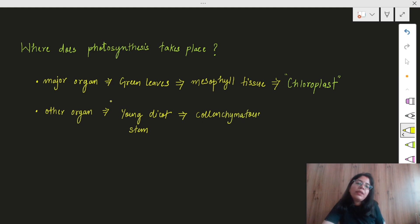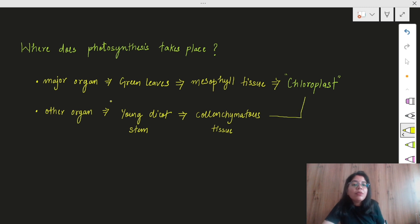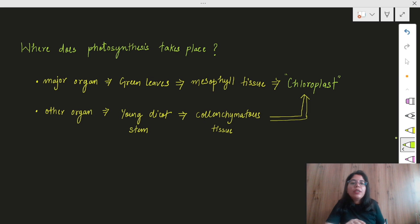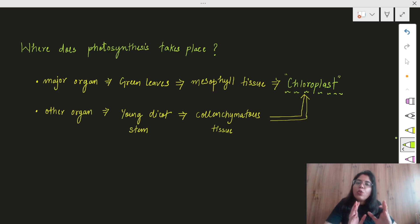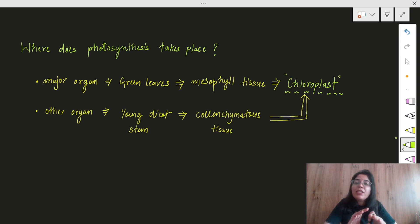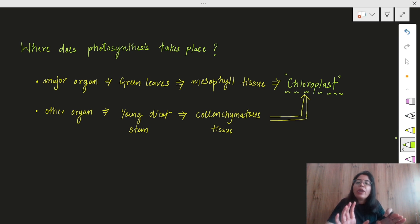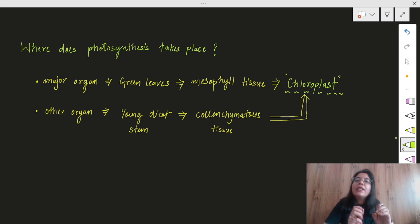That tissue is colenchyma. Colenchyma is important because it also contains chloroplast, which is necessary for photosynthesis. Chloroplast is majorly present in the mesophyll tissue of the leaf, and it is also observed in the colenchyma of the young dicot stem. Remember, it must be dicot — monocot does not have colenchyma. Also, it must be a young dicot stem because in an old dicot stem, colenchyma is replaced by bark due to secondary growth.